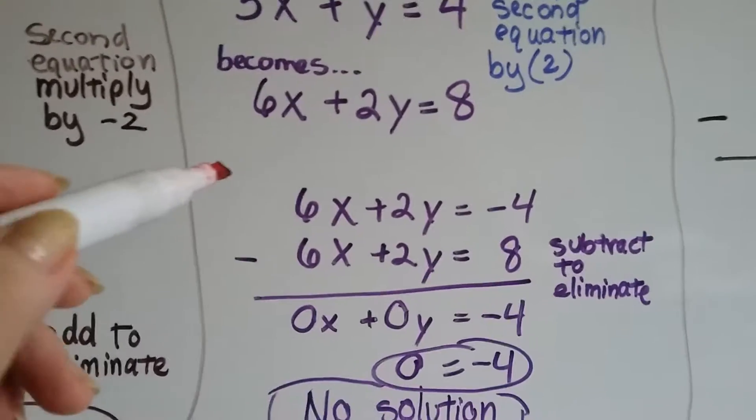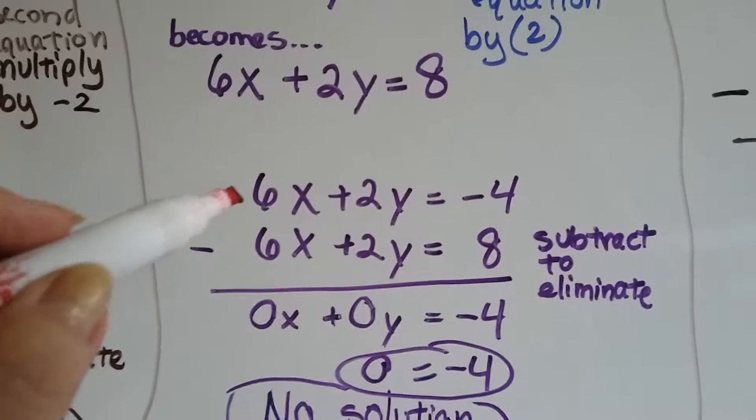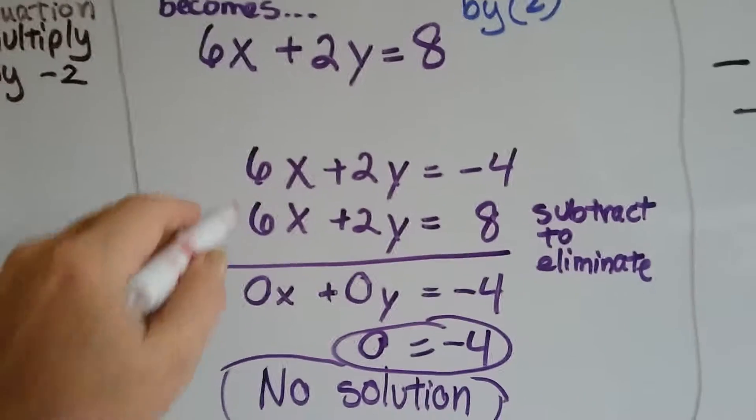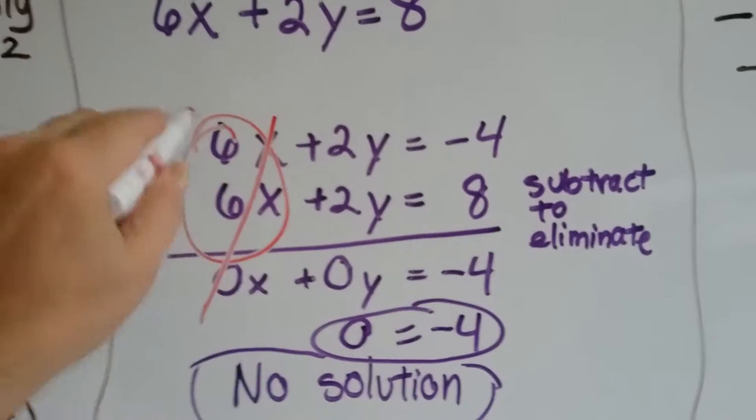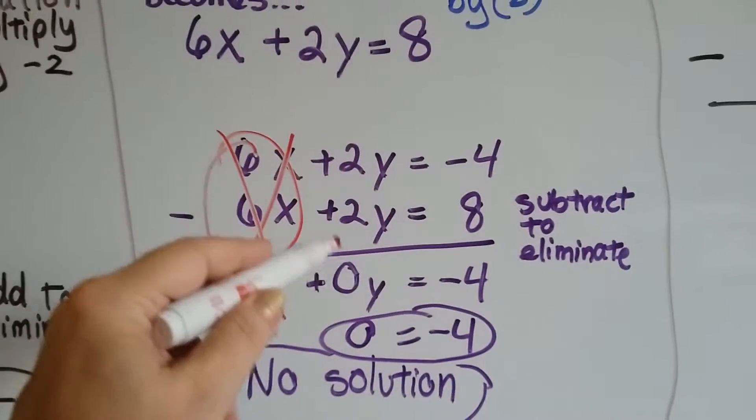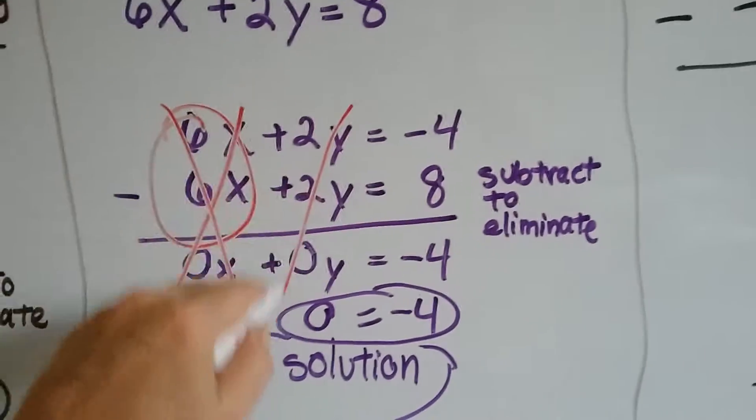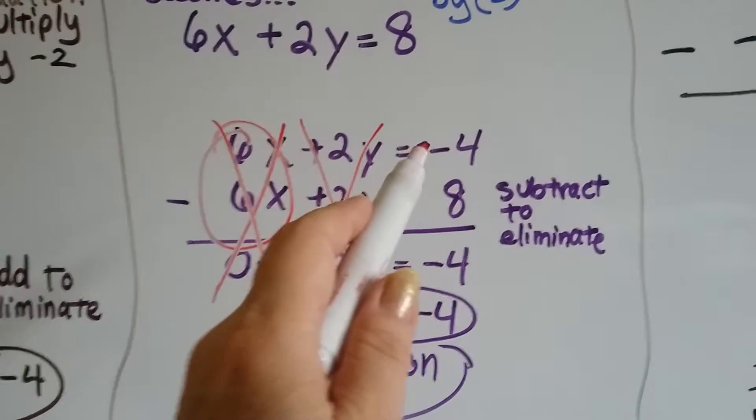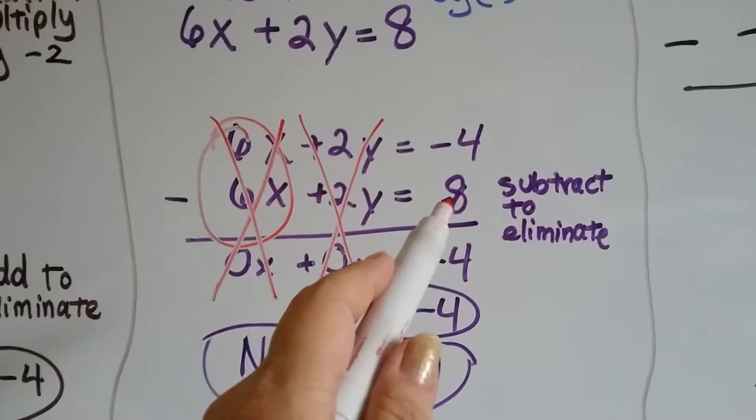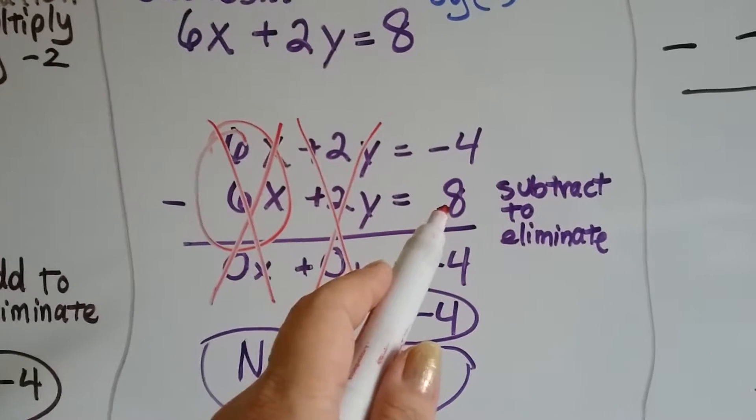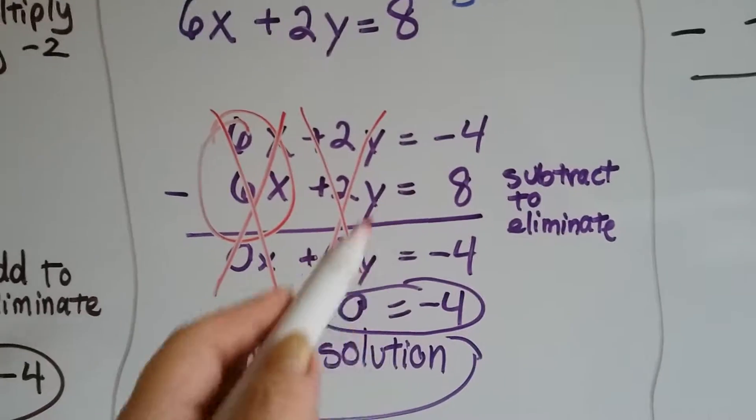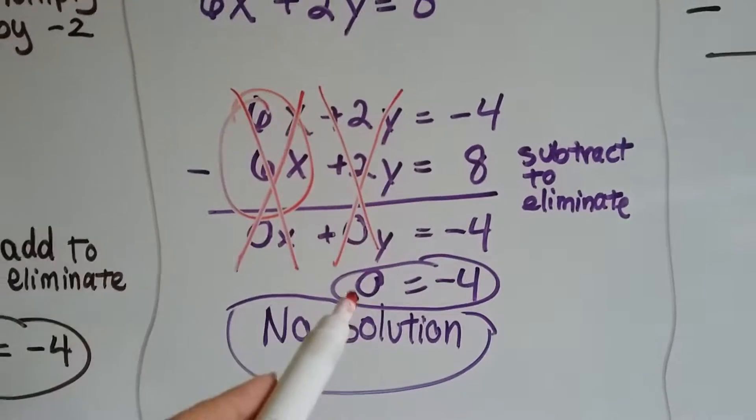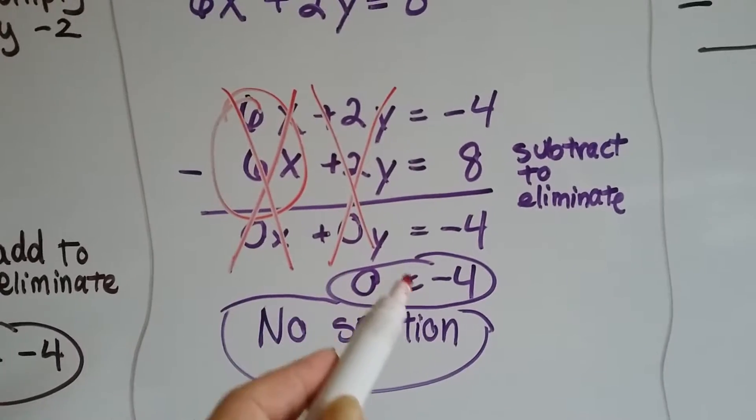We've got 6x minus 6x creates a zero pair. 2y take away 2y is a zero pair. Now all we're left with is -4 minus positive 8. We add the opposite, we get negative 4. So 0 = -4.